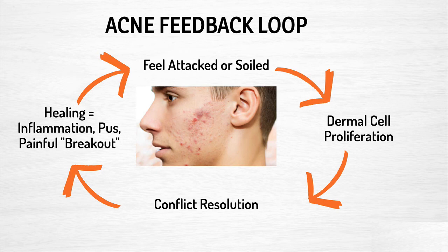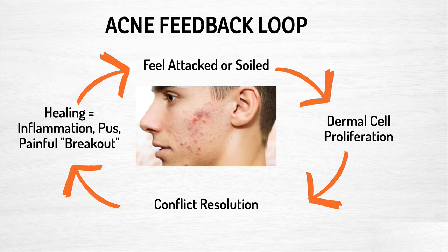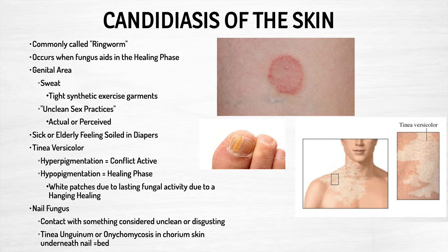This is the acne feedback loop — how a person can stay in consistent breakouts for years at a time. It starts from feeling attacked or feeling soiled, then you have dermal cell proliferation, then you resolve the conflict, but then you have the breakout, and the breakout itself serves as additional conflict. Every time it's there, you're hating it, thinking it's ugly, feeling soiled — you try to wash your face and feel dirty because your skin is broken out. That causes another attack or feeling-soiled conflict and you stay in this loop. You just have to break it at some point, realize your body is in healing, and resolve that conflict.